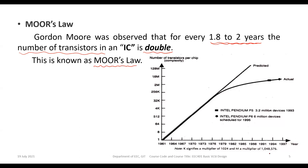His prediction has continued to hold, though it deviates slightly at some points. A graph of transistors per chip versus years shows that the number of components increases roughly as predicted, with only minor variations. This observation is called Moore's Law.